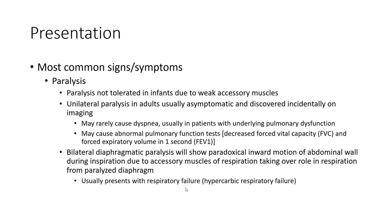Paralysis is not well tolerated in neonates due to weak accessory muscles. Unilateral paralysis in adults is usually asymptomatic and discovered incidentally on imaging. Bilateral diaphragmatic paralysis shows paradoxical inward motion of the abdominal wall during inspiration, as accessory muscles of respiration take over from the paralyzed diaphragm.